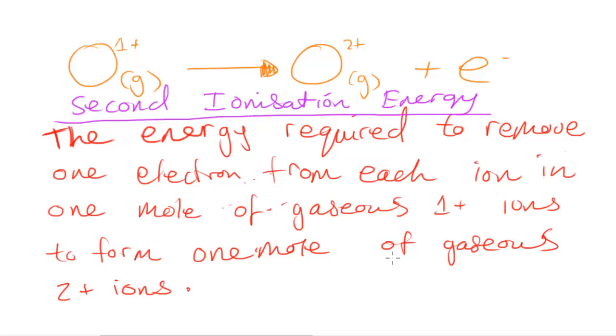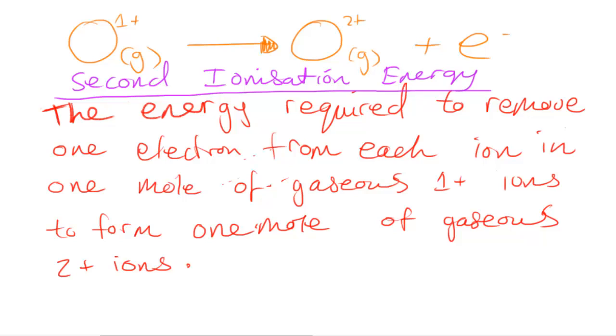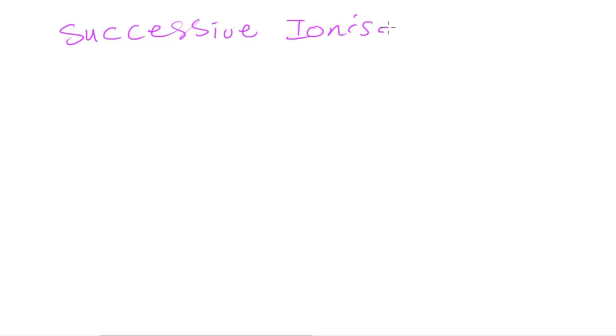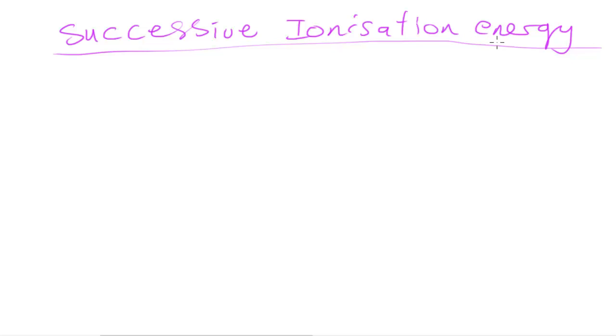So there we go: the energy required to remove one electron from each ion in one mole of gaseous one-plus ions to form one mole of gaseous two-plus ions. We can now modify this definition to make an overall summary for the ionizations which continue to happen after the first electron has been removed. So, successive ionization energy — if you're asked a question about it, this is probably what you'd write.